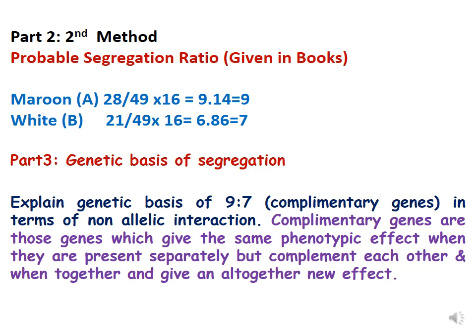In your record files you will explain both methods for calculating probable segregation ratio. Part 3 is explain the genetic basis of segregation. Since 9:7 is our probable segregation ratio and we know from theory that 9:7 is the complementary gene ratio, we explain the genetic basis in terms of non-allelic interaction: complementary genes are those genes which give the same phenotypic effect when present separately but complement each other when together and give an altogether new effect.